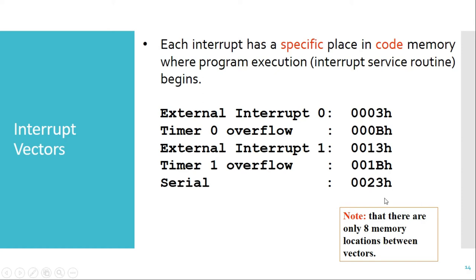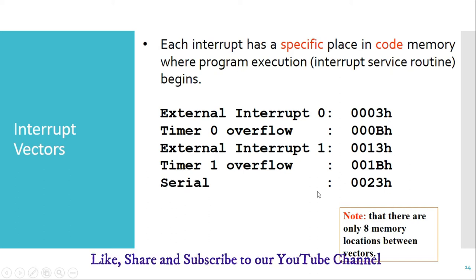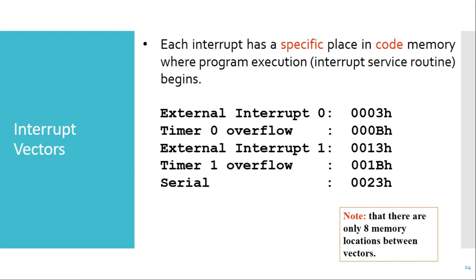Another thing to note about these vector addresses is that there are only eight memory locations between every vector address. Eight memory locations are not sufficient if you want to write a complex interrupt service routine. In that case we have to jump from the vector address location to some other location in program memory and write the interrupt service routine there.